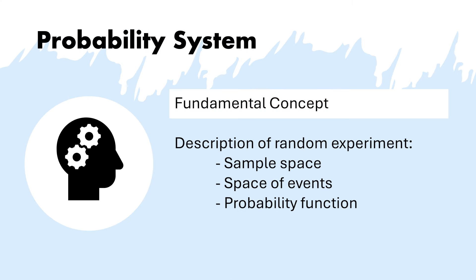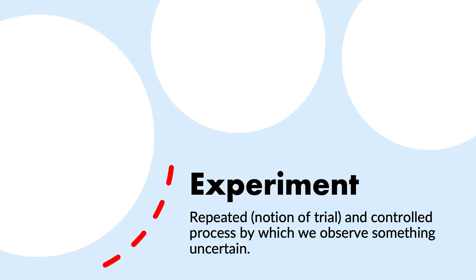The fundamental concept of probability theory is the probability system. It encapsulates all the information we can have about a random experiment, involving the sample space, the space of events, and the probability function. A random experiment is a process which has to be repeated and controlled — a process in which we observe something uncertain, something that involves the unknown, something we need to observe before we actually know the outcome.